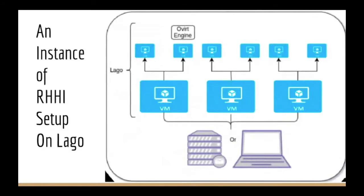Now coming to Red Hat Hyperconverged Infrastructure, or RHHI for short. An example of system tests on Lago is perfectly encompassed by the oVirt system tests for RHHI. An RHHI setup requires a minimum of three hosts with nested virtualization capabilities so that it can run VMs on top of these three hosts.